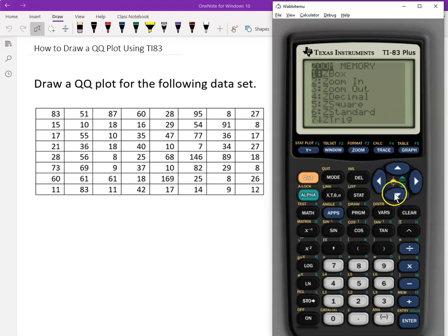Click Zoom. Go down to number nine. ZoomStat. And then enter.